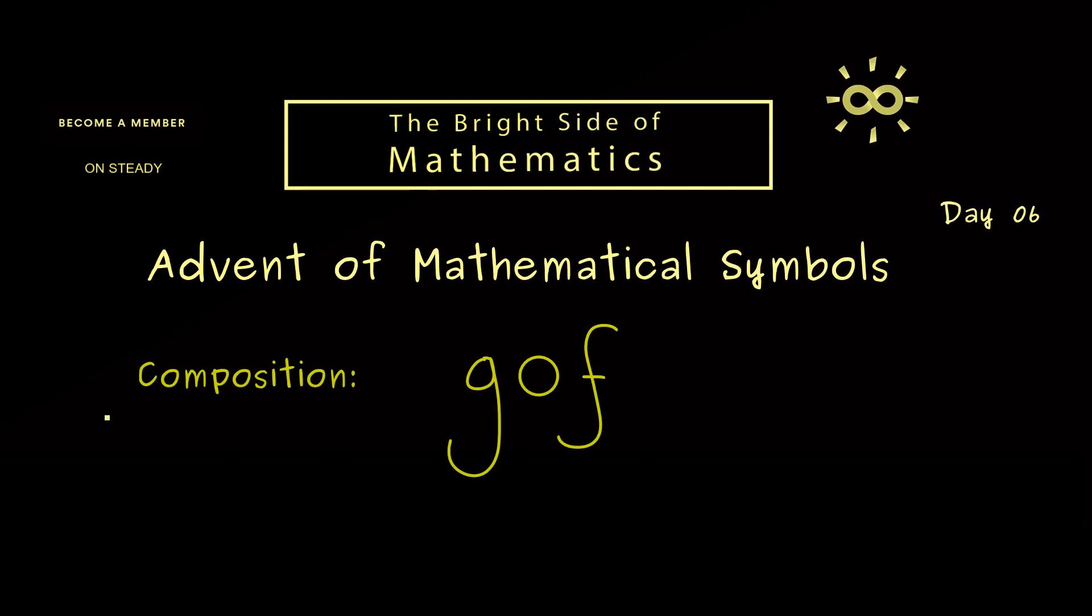Indeed, the composition is very basic but it's an important notion throughout mathematics. It simply merges two maps into a new one. And the definition can simply be given when we put in an element x.